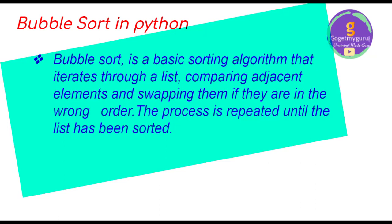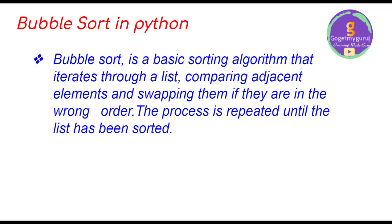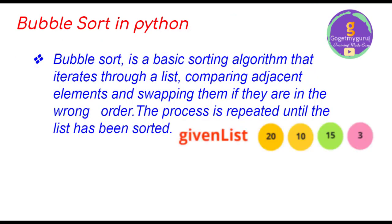Bubble sort is a basic sorting algorithm that iterates through a list, comparing adjacent elements and swapping them if they are in the wrong order. The process is repeated until the list has been sorted. If you have a list of numbers not in ascending or descending order, you can use this bubble sort method.